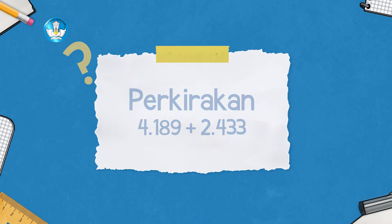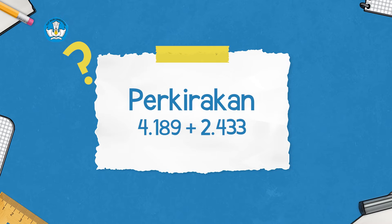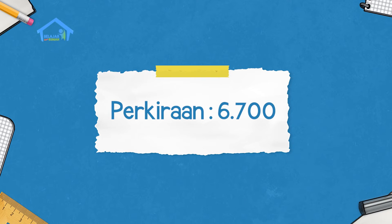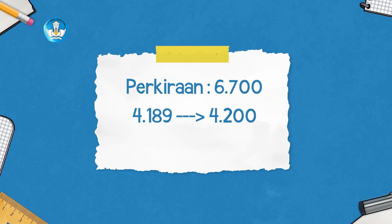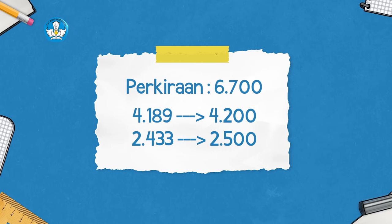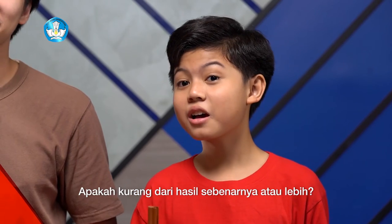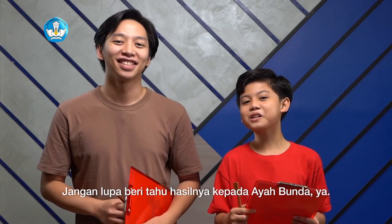4.189 ditambah 2.433. Perkiraan Kak Jo kayaknya 6.700. Dapat dari mana? Kak Jo mencari lewat bilangan sepadan: 4.189 menjadi 4.200, dan 2.433 menjadi 2.500, hasilnya adalah 6.700. Karena bilangannya Kak Jo padankan ke atas, ya hasilnya mungkin lebih dari hasil sebenarnya. Oh iya, paham aku sekarang. Hasil teman-teman bagaimana? Apakah kurang dari hasil sebenarnya atau lebih? Jangan lupa beritahu hasilnya kepada ayah dan bunda ya.